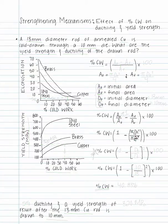This example problem is about strengthening mechanisms, the effect of percent cold work on ductility and yield strength. A 13 mm diameter rod of annealed copper is cold drawn through a 10 mm die.